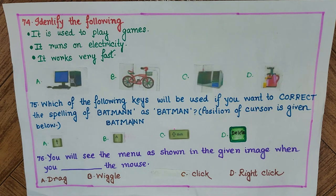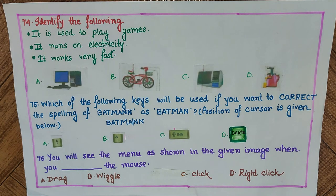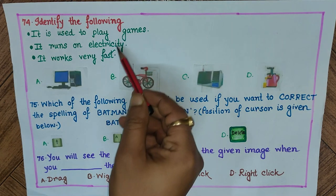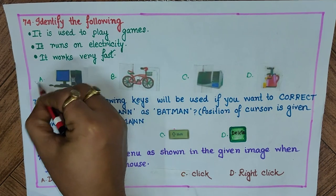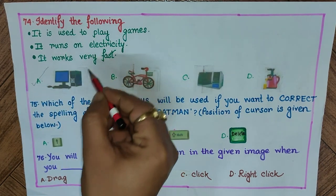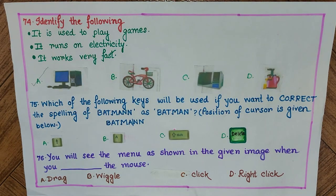Question 74: Identify the following — it is used to play games, it runs on electricity, it works very fast. Options: A) computer, B) bicycle, C) window AC, D) gas lighter. The thing that satisfies all three conditions is a computer. The answer is A) computer.